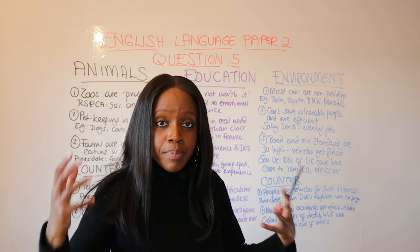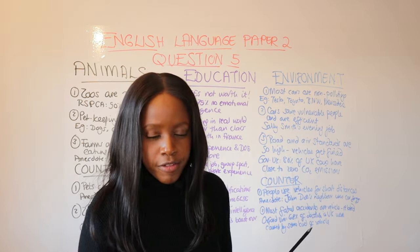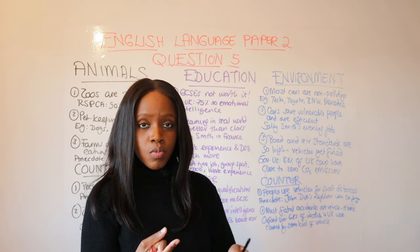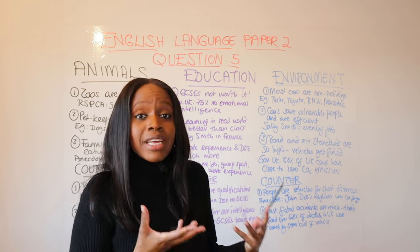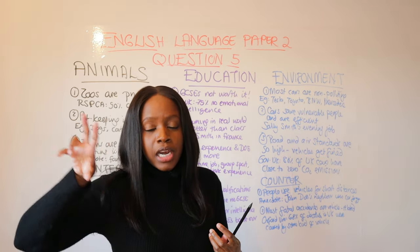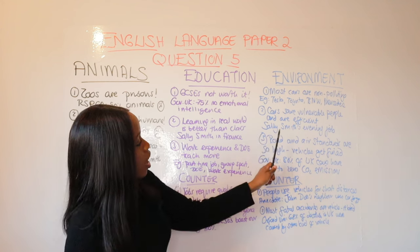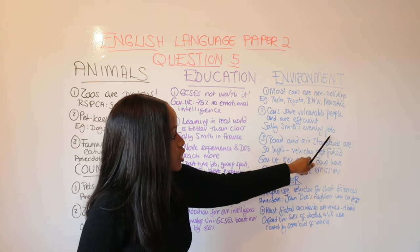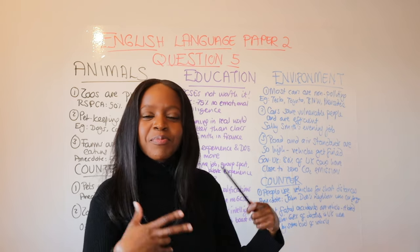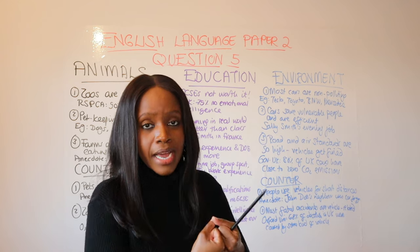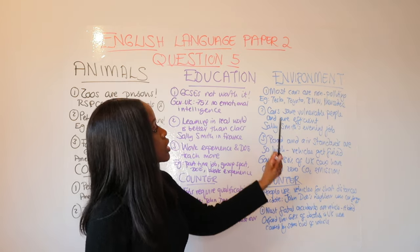The second argument is that cars have saved vulnerable people and make us far more efficient. If you banned cars, what would happen to disabled people who can't easily use trains? People working late shifts — for example, Sally Smith who's in sixth form and works a night shift at McDonald's — actually need their car. Banning it would leave her very vulnerable and exposed going home.